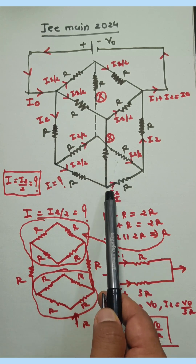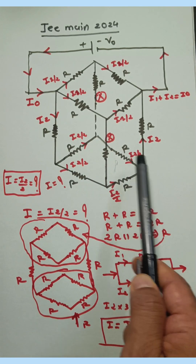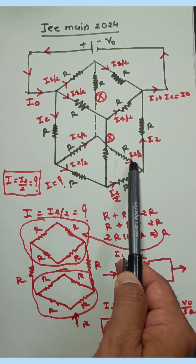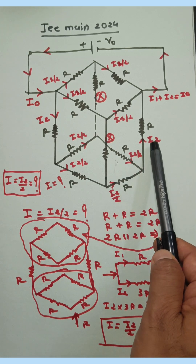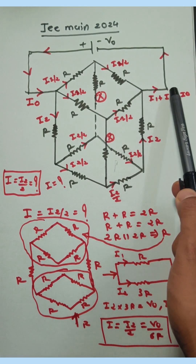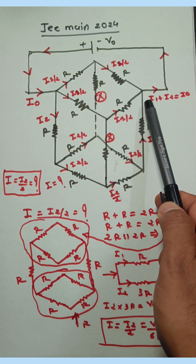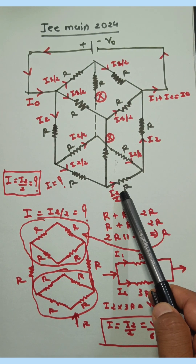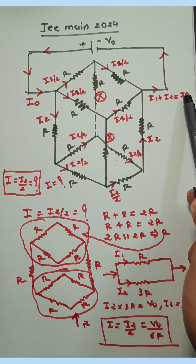There is no current in the vertical wire, so I2/2 is passing through R. Here also there is no current in the vertical wire, so I2/2 plus I2/2 gives I2. Total current on the outside: I1/2 plus I1/2 is I1, and I2/2 plus I2/2 is I2. So total current is I1 plus I2, which equals I0.